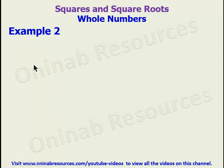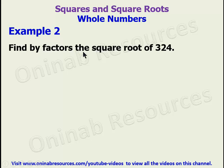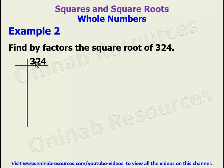We go to Example 2: find by factors the square root of 324. We are going to express 324 as a product of prime factors, then find the square root from there. We create a table with a column for the number and a column for the prime factors. Since 2 can divide 324, we start with 2. 324 divided by 2 gives 162; 162 divided by 2 gives 81.